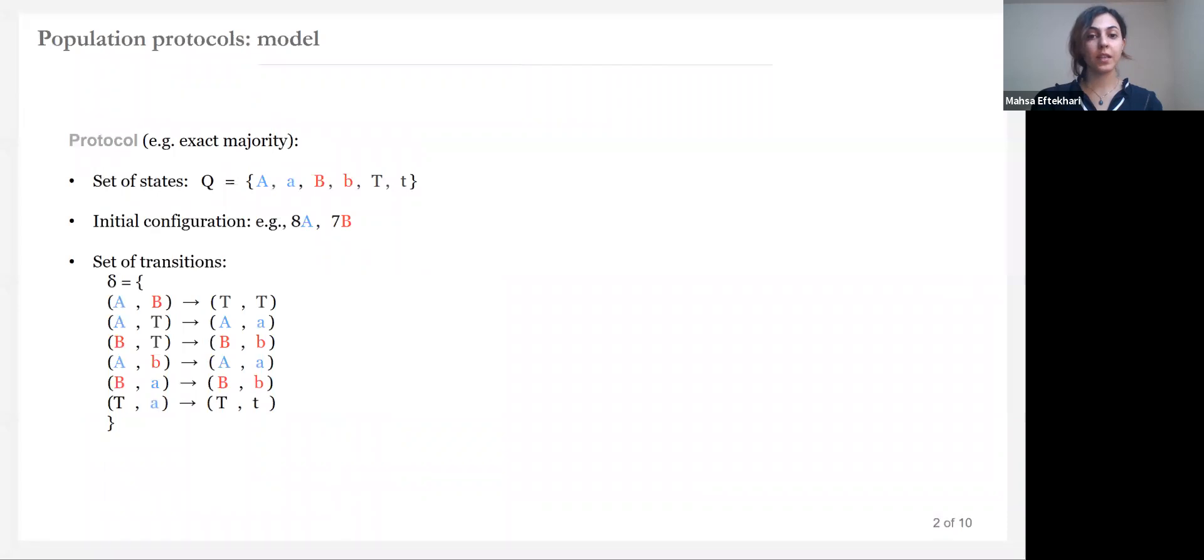Formally speaking, a protocol consists of a set of states, a set of initial configuration, and a set of transitions. With this specific six-state protocol, the agents can determine if in the initial configuration there are more As or more Bs or even if it is a tie.